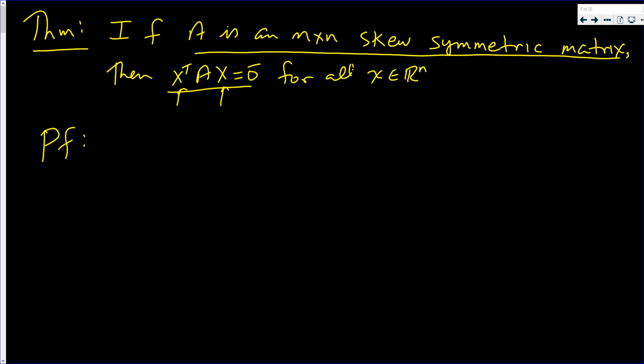I always get suspicious when I see problems like this. I like to know what size matrices I have. Well, if x is in R^n, that implies that x is an n by one matrix.